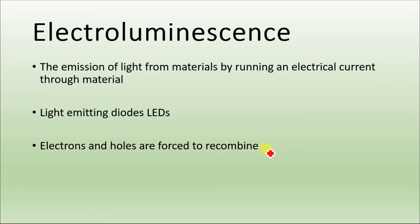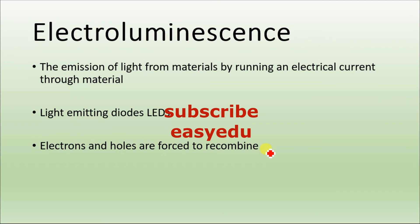The best example of electroluminescence is light-emitting diodes (LEDs). In LEDs, electrons and holes are forced to recombine and they emit photons or light. That's the main difference between photoluminescence and electroluminescence. Thank you for watching, and don't forget to subscribe for more videos.